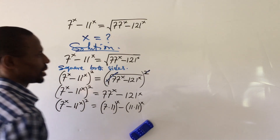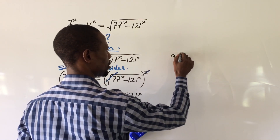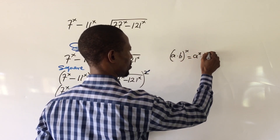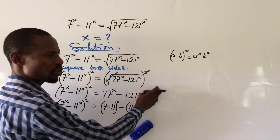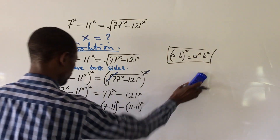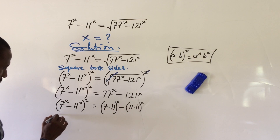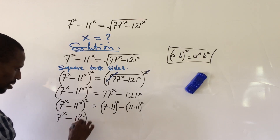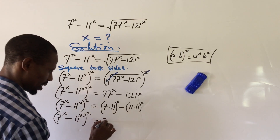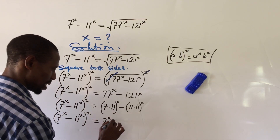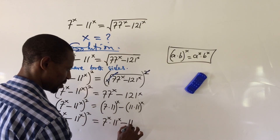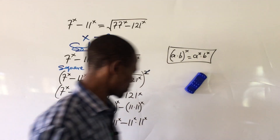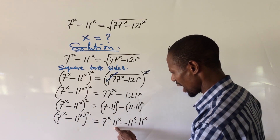According to the law of indices, if you have (a·b) to the power of x, this equals a to the power of x times b to the power of x. So we distribute the power among the quantities inside the bracket, and the right-hand side becomes 7 to the power of x times 11 to the power of x, minus 11 to the power of x times 11 to the power of x.